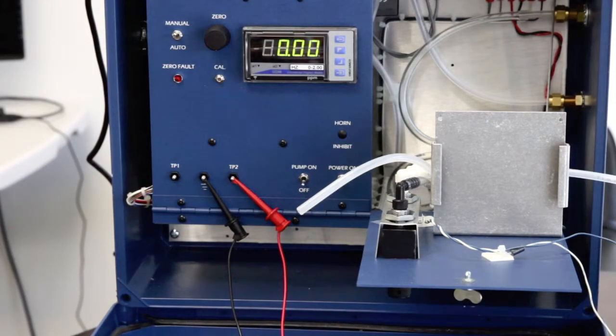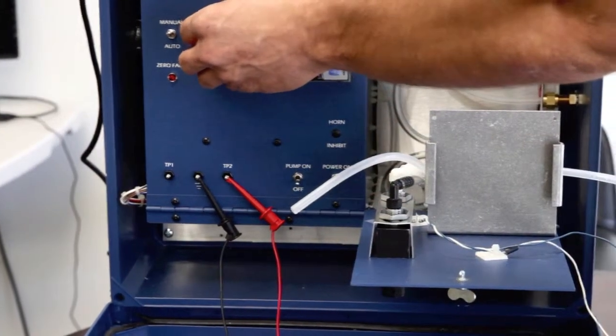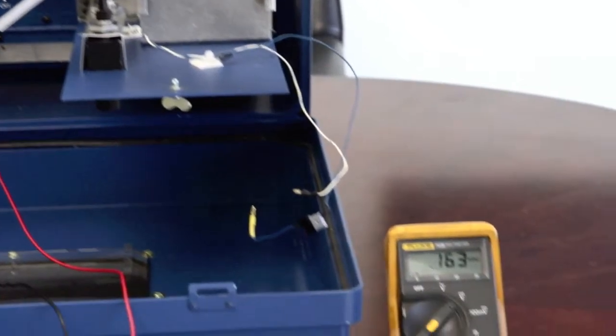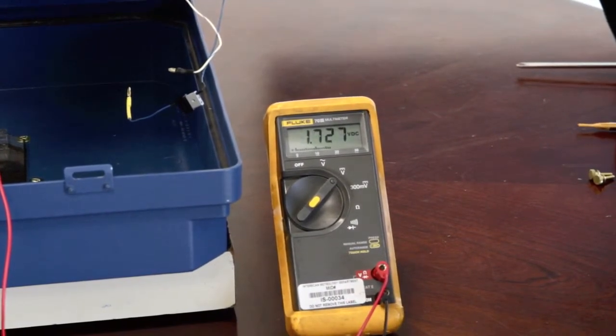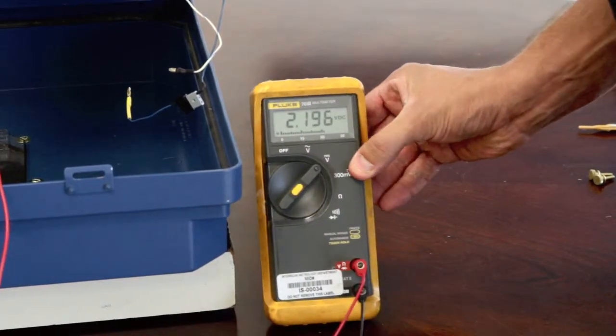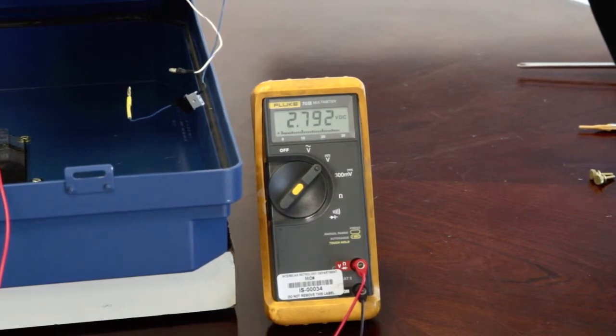Adjust the zero control upscale so that the digital voltmeter reads a value that is indicated on your ECS certificate. For the purposes of this demonstration, adjust the voltmeter to read 3250 millivolts.